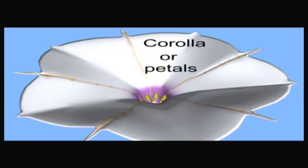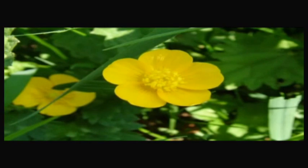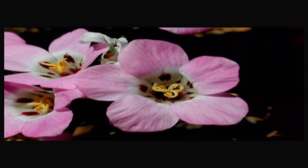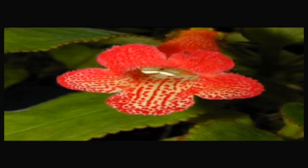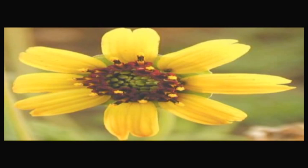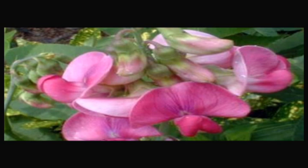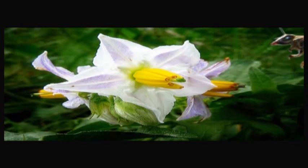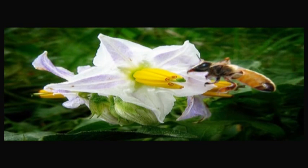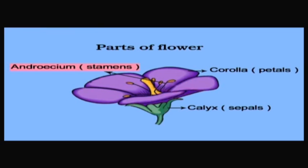The whorl lying inner to the calyx is called the corolla. The corolla consists of a number of delicate structures called petals. Petals are white in color. In some flowers, petals are bright-colored and in some they give fragrance. They are united to form a tube in some flowers; petals are free in some flowers, and only a few of the petals are fused while the rest are free. Petals attract insects for cross-pollination.